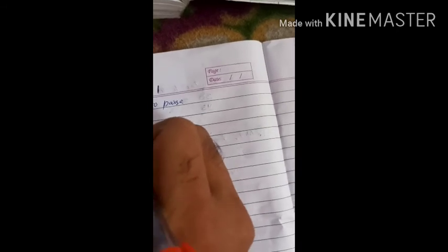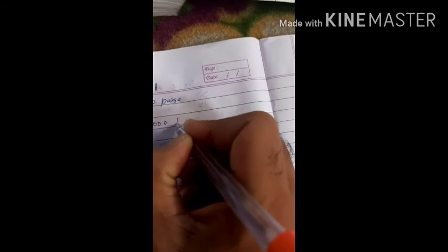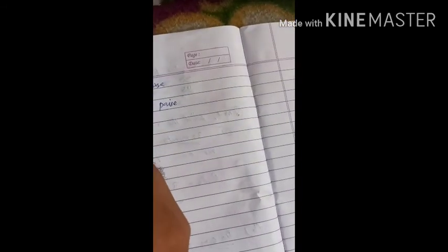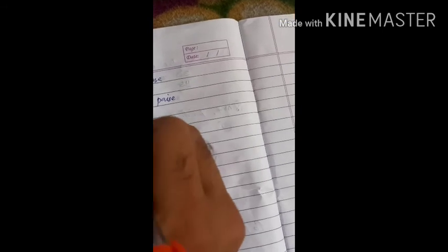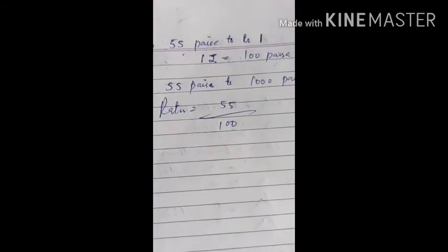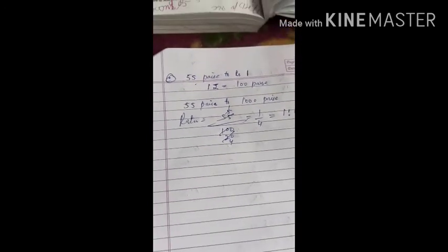So the ratio becomes 55 paisa to 100 paisa. The ratio equals 55 divided by 100. When we simplify by 5, we get 11 divided by 20, which is equal to 11 is to 20.